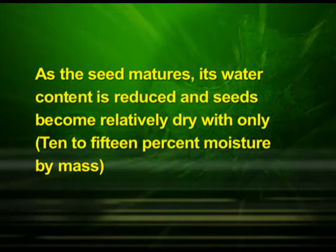Integuments of ovules harden as tough protective seed coats. The micropyle remains as a small pore in the seed coat, facilitating entry of oxygen and water into the seed during germination. As the seed matures, its water content is reduced and seeds become relatively dry with only 10 to 15 percent moisture by mass. The general metabolic activity of the embryo slows down, and the embryo may enter a state of inactivity called dormancy. If favorable conditions of adequate moisture, oxygen and suitable temperature are available, they germinate.